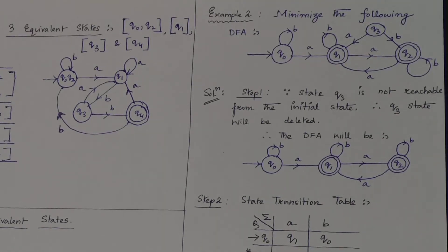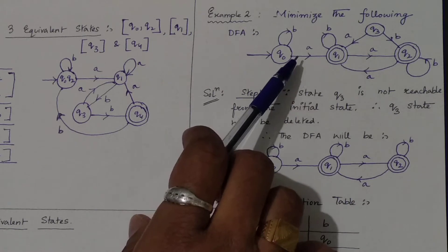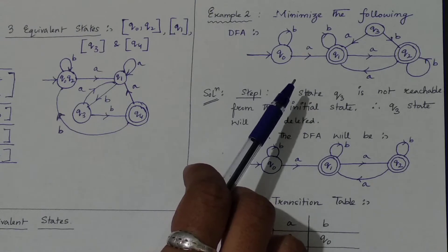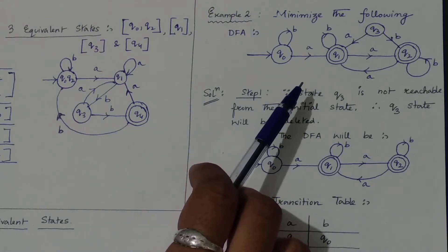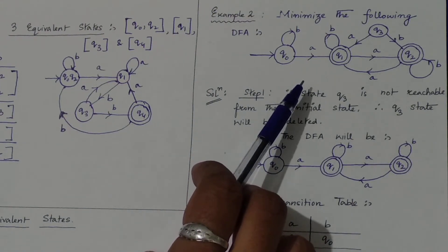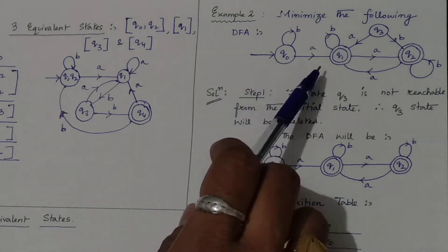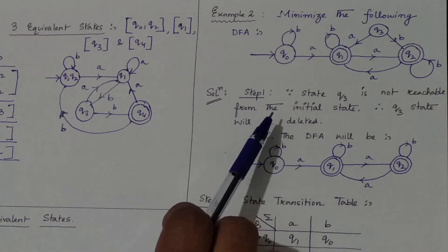This example covers a topic I mentioned in the previous lecture: if a particular state is not reachable from the initial state, then we have to delete it. This is example number two, where a particular DFA is given and we have to minimize it. Step one says: find any states, apart from the initial state, which are not reachable from the initial state.